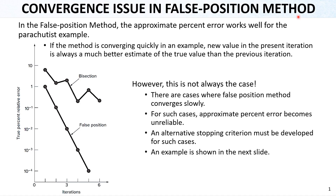We showed that the false position method is quickly converging to the true value, finding the true root, and it is quicker compared to the bisection method. For the parachutist example, you can see the results over here. If the method is converging quickly, the present iteration is always a much better estimate of the true value than the previous iteration. However, this may not always be the case, and there can be some convergence issues for the false position method.